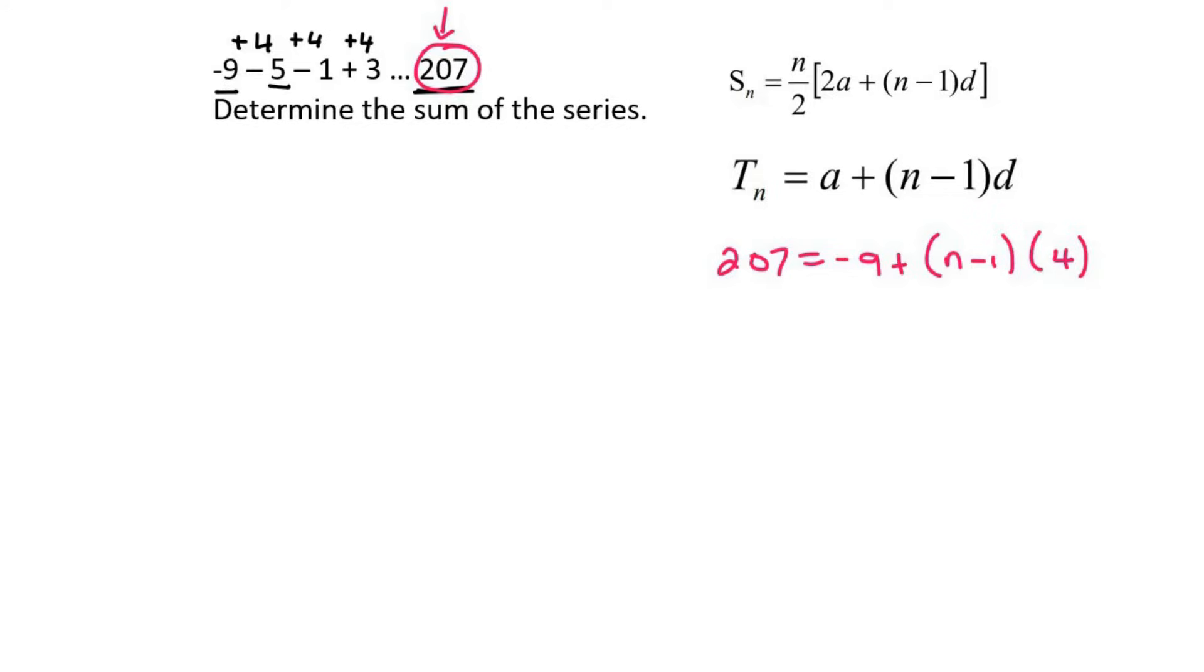And the common difference we said is positive 4. Then we can just solve this however you want. So I'm going to take the 9 over. Now you could multiply the 4 in if you want but I'm rather going to divide by 4. And so that's going to be 54 equals to n minus 1.